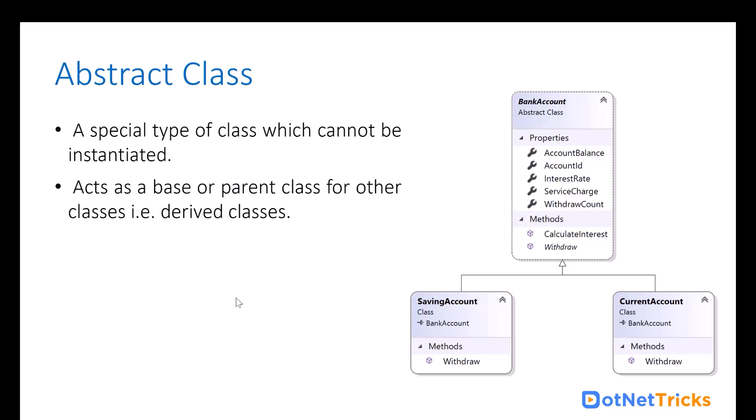If you look at this example, we created an abstract class for the bank account. In a bank, we have different types of accounts — we have a saving account, a current account, and a loan account. Both accounts share common properties: account ID, account balance, interest rate, service charge, withdraw count, and we also have a calculate interest method.